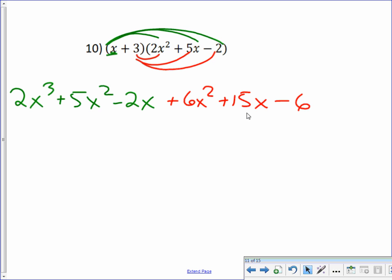The smart board's acting a little weird. And then we are going to multiply the 3 by everything in the second term. So plus 6x squared plus 15x minus 6. And then we just combine like terms. There's 2x cubed plus 11x squared. I feel like I made a mistake somewhere. No. No, I did not. Plus 13x minus 6. And now we have, those are like terms that were combined. And we are done with that problem.